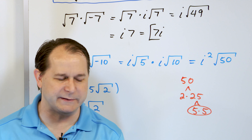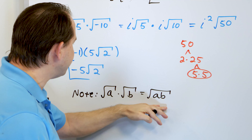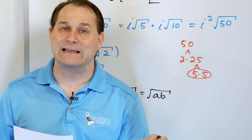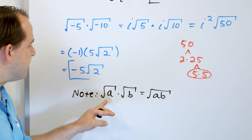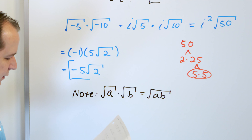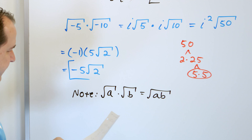I want to caution you something extremely important — a real gotcha. Anytime you have radicals with negative numbers underneath, the priority is to deal with each radical separately first. Then, if you're going to multiply radicals, you do that afterward. Here, we turned square root of negative 7 into i times root 7, then multiplied the radicals. Or, we turned square root of negative 5 into i root 5, and square root of negative 10 into i root 10, then multiplied under the radicals.